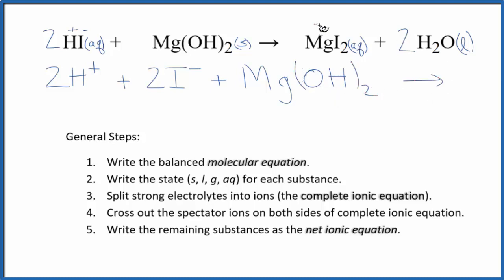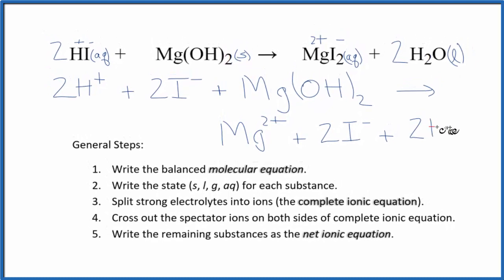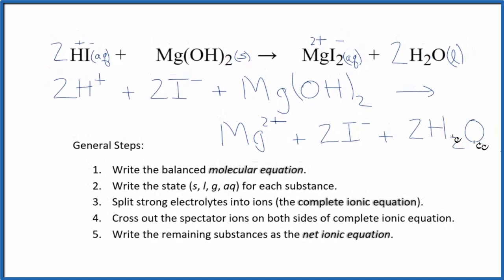And the products: magnesium group 2, 2+, and the iodide ion, 1-. So I have Mg²⁺ plus two of these iodide ions, plus—we don't split water, we don't split liquids apart in net ionic equations—2H₂O. And this is the complete ionic equation.